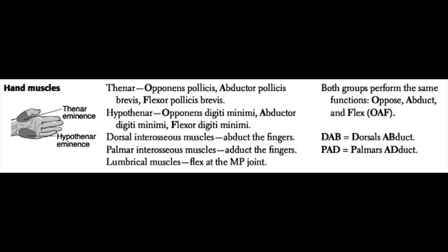So that's opponens, abductor, and flexor — oppose for O, abduct is A, and flex is F. OAF spells out O-A-F. That's how you can remember the thenar eminence muscles.